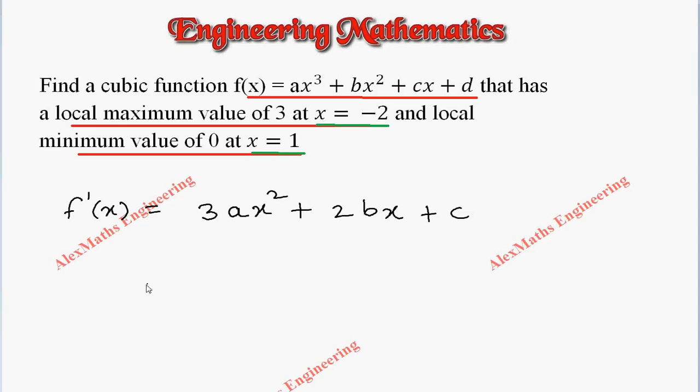So we will take it as a factor. When x equals minus 2, then the factor is x plus 2 equal to 0. Similarly when x equals 1, then the factor is x minus 1 because from this we get the value of x.